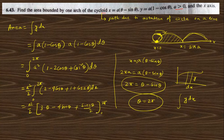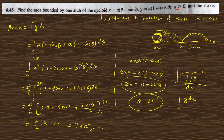Evaluating from 0 to 2π: sin 2π = 0, sin 0 = 0, sin 4π = 0, so the sine terms vanish. We are left with (a²/2) × 3θ evaluated from 0 to 2π, which gives (a²/2) × 3 × 2π = 3πa². So the answer to question 6.43 is 3πa². If there is any doubt, please comment in the comment box.